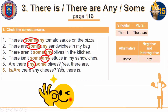Number six is again a question: 'There ___ any cheese?' You already have 'any,' but you need to pay attention to whether you need 'is' or 'are.' Cheese — it's only one, singular. That's why you need to use 'is,' as you have here in the answer.